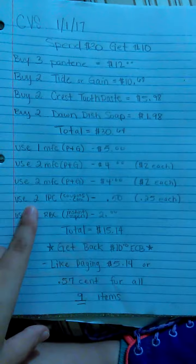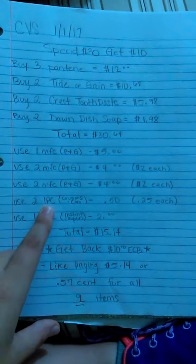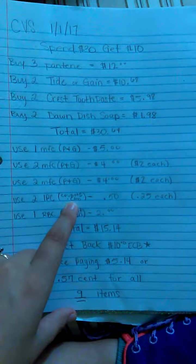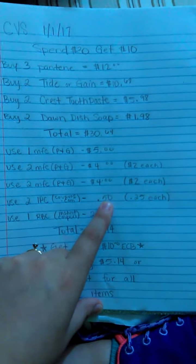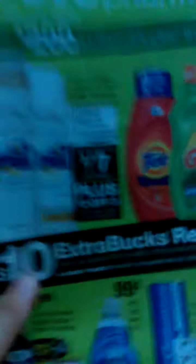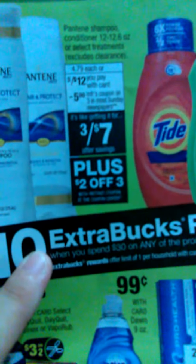You're going to use two internet printable coupons from coupons.com for the Dawn Dish Soap. You're going to need two of them. That gives you 50 cents off and then there's going to be an instant coupon right here plus $2 off. Instant coupon from the Redbox machine.